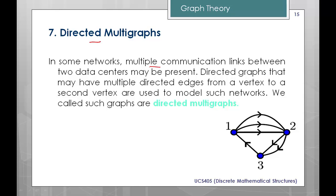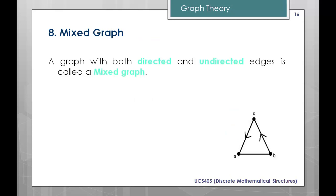Next is directed multigraph. In this case, multiple communication links between two data centers or two data nodes may be present. In the example, between vertices 1 and 2 there are three lines, so multiple directed edges are present from one vertex to the second vertex. These are directed multigraphs.